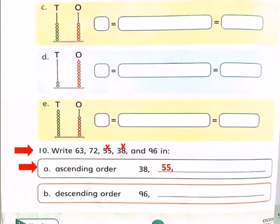So what we will do? We will cross 63 and we will write it down. Now there are two numbers, 72 and 96. Which is smaller? Yes, 72. So we will cross 72 and we will write it down. Now the biggest number left. So we will cross 96 and we will write it down.